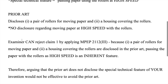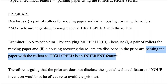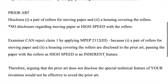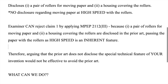The examiner can reject claim 1 by applying MPEP 2112 paragraph 3 because the pair of rollers for moving the paper and the housing covering the rollers are disclosed in the prior art. The examiner will consider that since these two features are disclosed, the inherent result — the special technical feature of passing the paper with the rollers at high speed — is inherent. Therefore, arguing that the prior art does not disclose the special technical feature of your invention would not be effective to avoid the prior art in your US case, whereas making that argument in Japan could possibly get you an allowance.